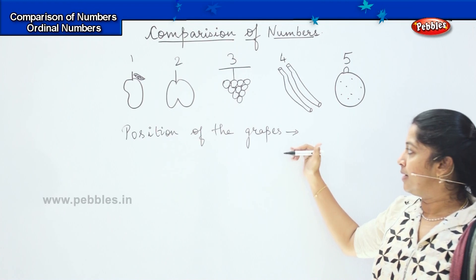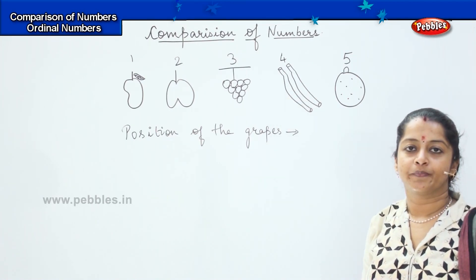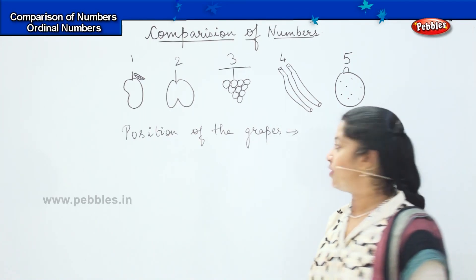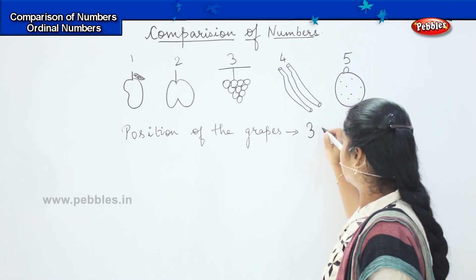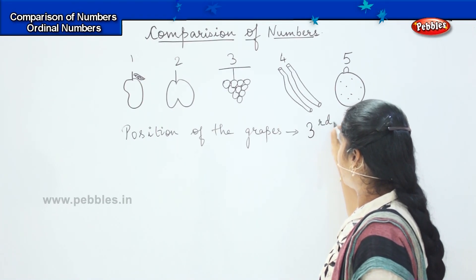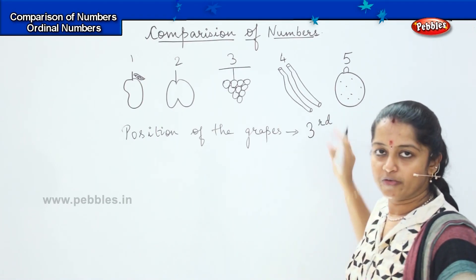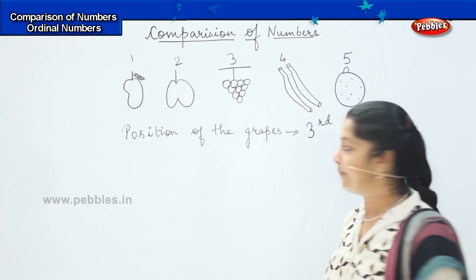Can you tell me the position of the grapes? Good — it is third. So we will write 3 and 'rd' on top of it.